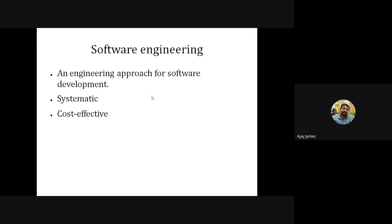In software also, we need to follow this engineering approach; otherwise the software will fail, there will be many errors in the final software. In order to have a systematic approach, we need one for software development. Only then will it be cost effective. Software engineering is basically an engineering approach for software development that is systematic and cost effective.